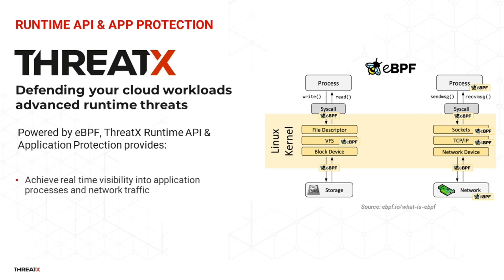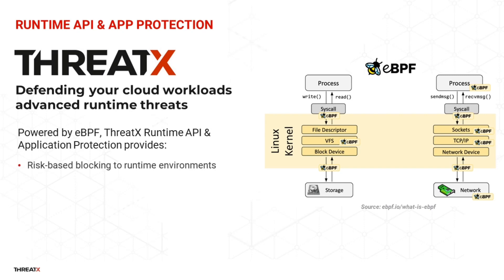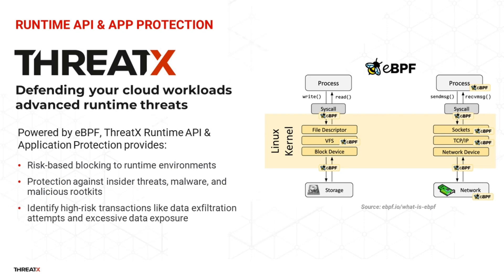So why EBPF-based security? To address these evolving threats, we recently announced a new solution: Runtime API and Application Protection, designed to safeguard your workloads at runtime. In order to overcome the historical limitations of RASP solutions, ThreadX Runtime Protection leverages a technology called Extended Berkeley Packet Filter, or EBPF, a powerful framework that attaches to the kernel level within Linux environments. EBPF allows us to achieve real-time visibility into application processes and network traffic, and protect runtime environments without modifying kernel code, granting insight into system components and activities beyond HTTP traffic.